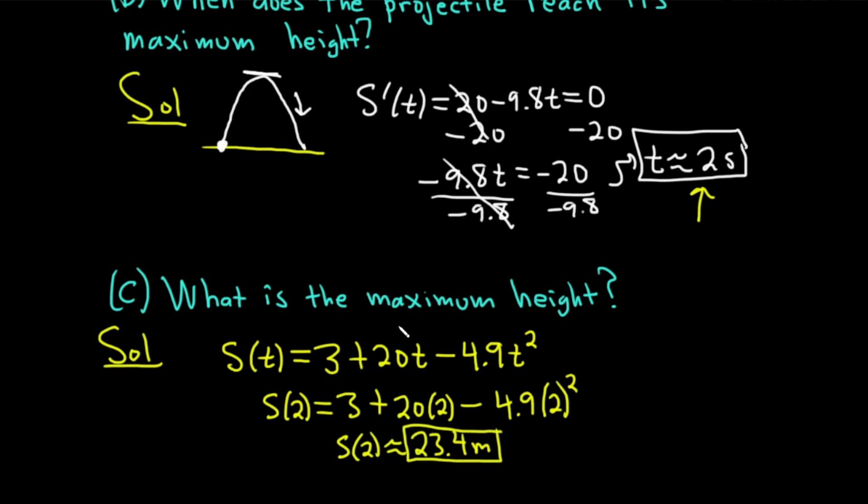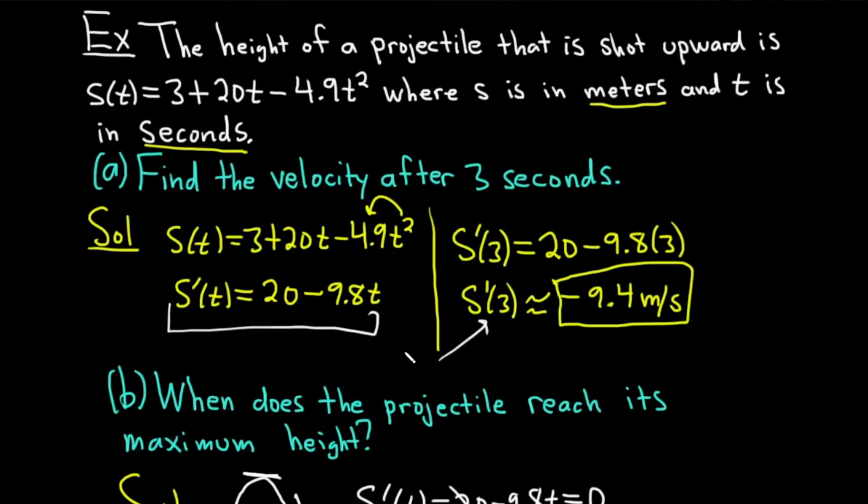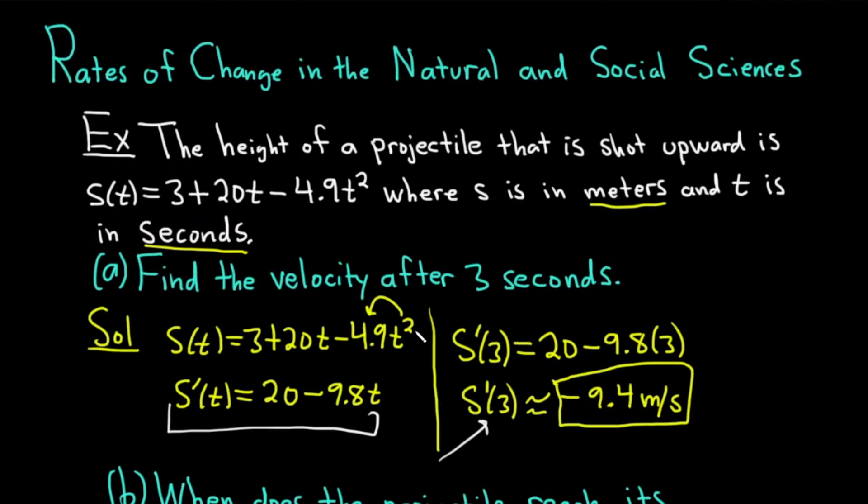Let's just go over the whole problem really quickly one more time to make sure you got the ideas down because this is a nice problem that is very typical. So we're told a projectile is shot upward and we're given this position function s(t), which is 3 + 20t - 4.9t².